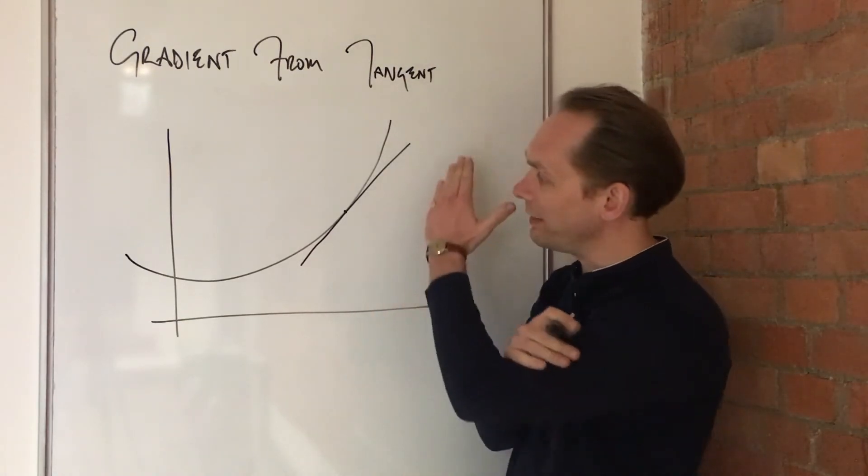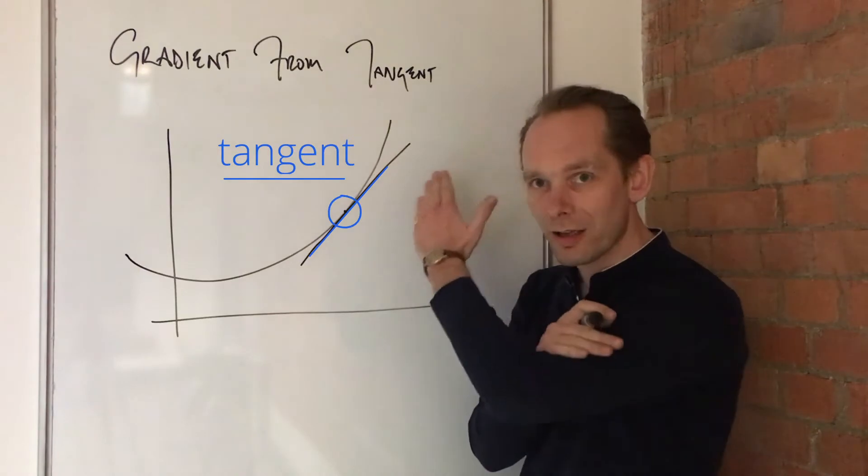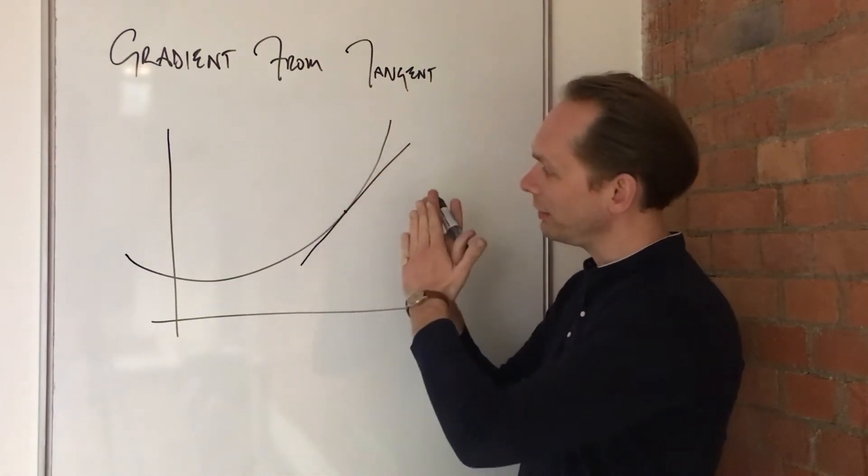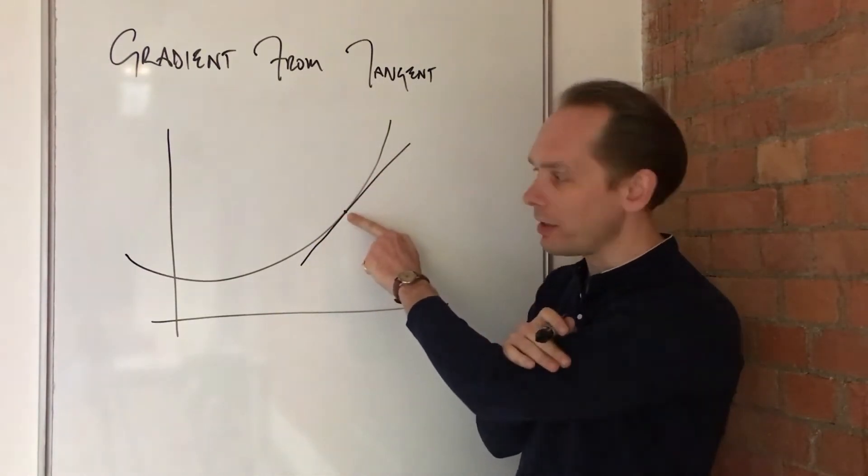So a tangent is a straight line that just glances across a curve. It doesn't cross it. At that moment, it has the same gradient.